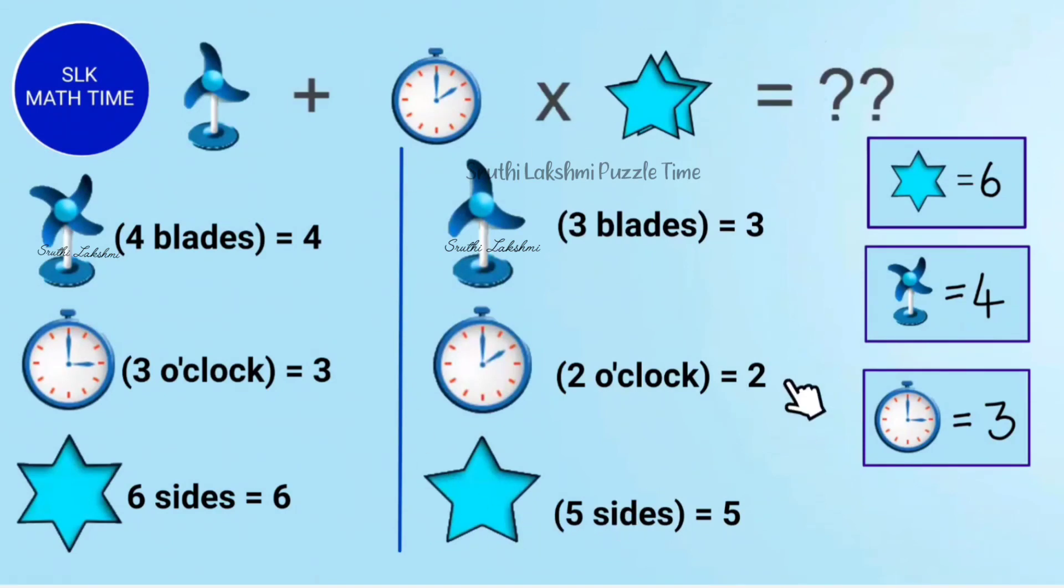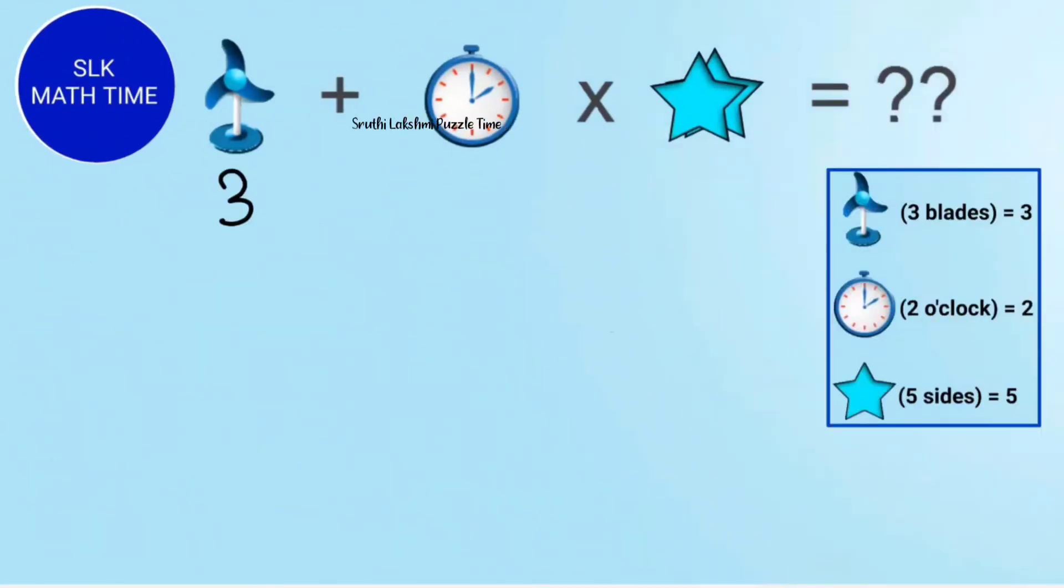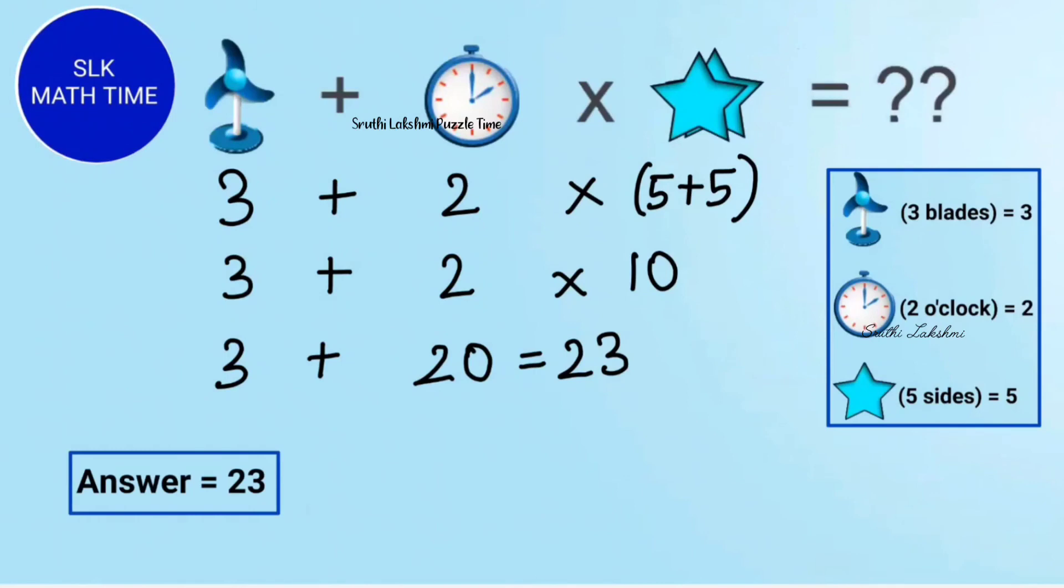So now let's substitute these values to get the answer. So we write 3 plus 2 into 5 plus 5. 5 plus 5 is 10. So next, we do 3 plus 2 into 10. And 2 into 10 is 20. And when we add 3 to 20, we get 23. So the answer is 23.